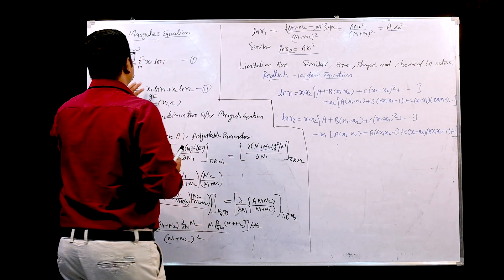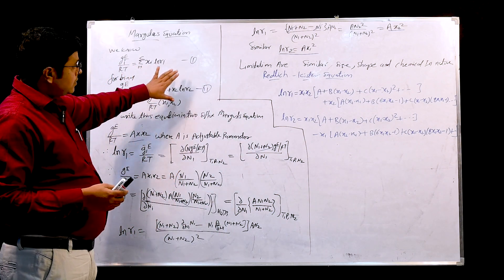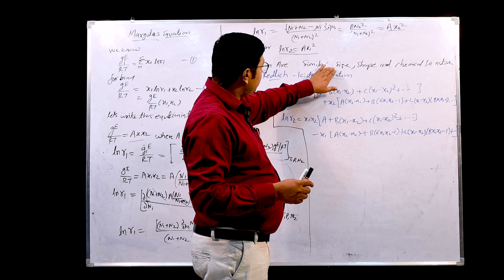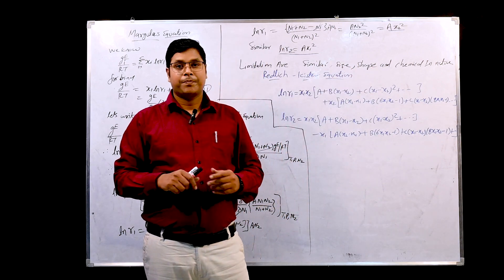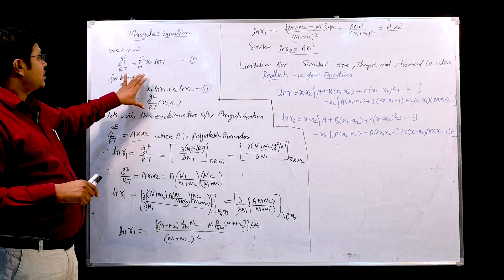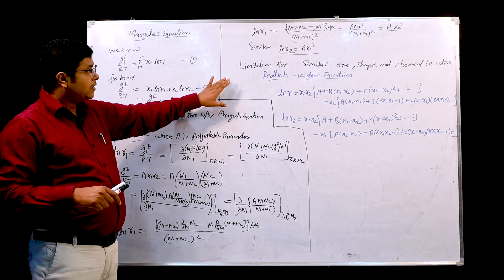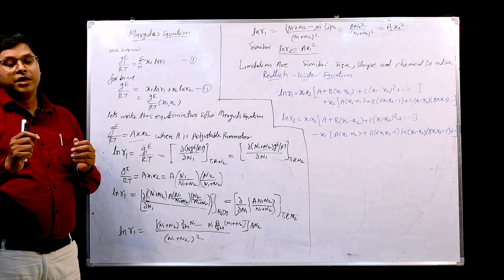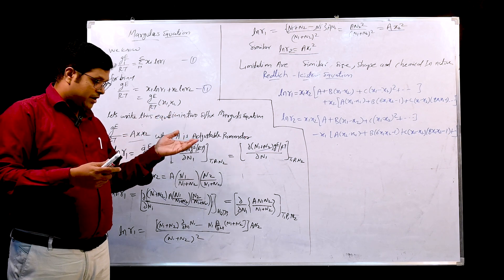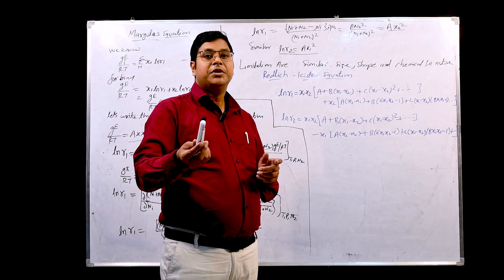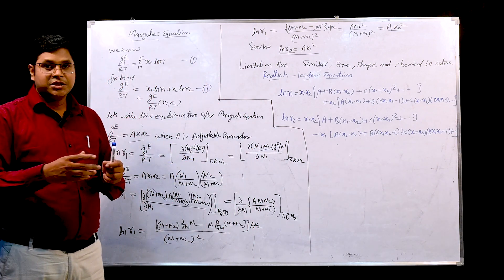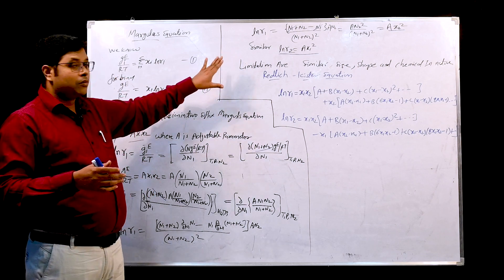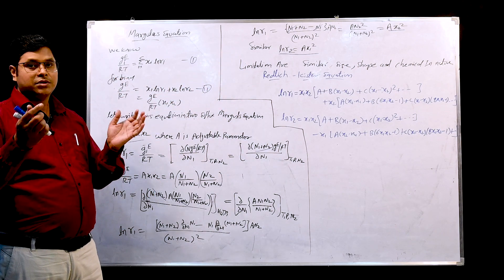This equation or this relation suggested by the Margules equation is very applicable when the particles or molecules are similar in size, shape and their chemical nature. This is a very strong limitation of this Margules equation and that is why this is valid for certain ranges or some selected groups of components. If you go beyond that, like if I have methane and we take benzene, there is a large molecular size difference. In such cases this equation is not applicable or whatever value we will get is not justifiable.